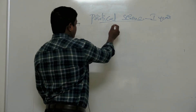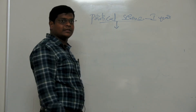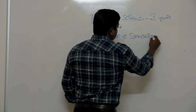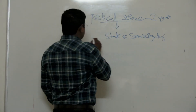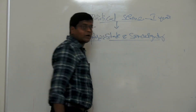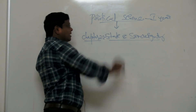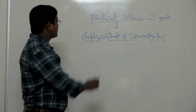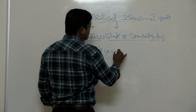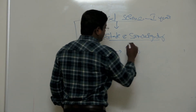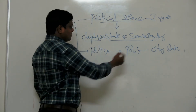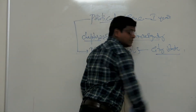Today our civics class started with State and Sovereignty — this is Chapter 2. Before going to State and Sovereignty, we will discuss something about the introduction of political science. The term political science or politics is derived from the Greek word 'polis,' which means city-states. Hence, the subject matter of political science is the study of city-states.